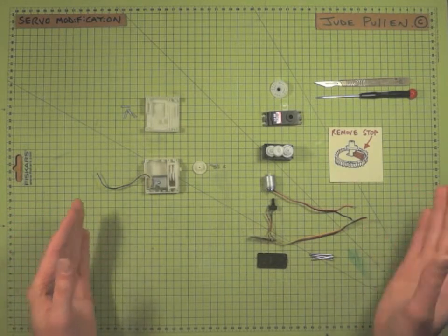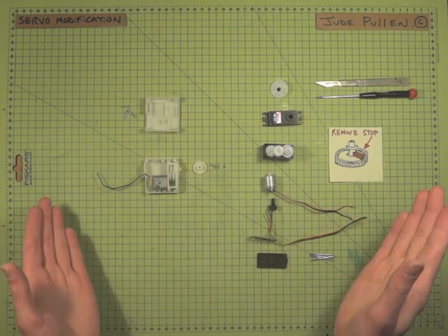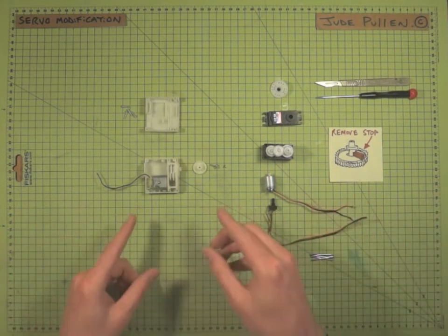Basically, a servo is usually only designed to go between 0 to 180 degrees, so it has a little detail that stops it from doing that.